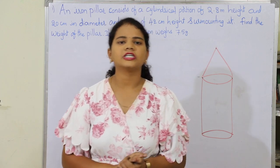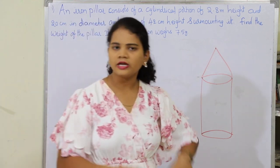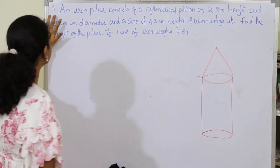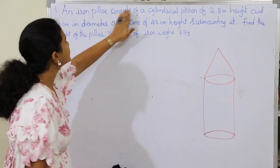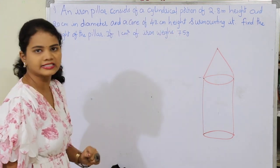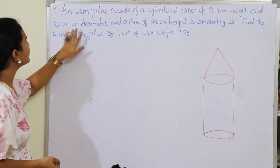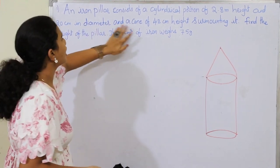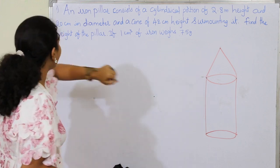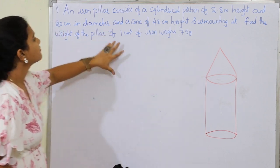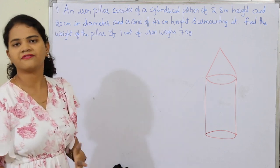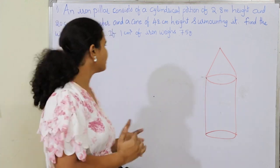Hey guys, I'm Lakshya and I'm back again with Exercise 10.3, Mensuration Class 10. Here you have the first question: An iron pillar consists of a cylindrical portion of 2.8 meter height and 20 cm in diameter, and a cone of 42 cm height surmounting it. Find the weight of the pillar if 1 cm cube of iron weighs 7.5 grams.